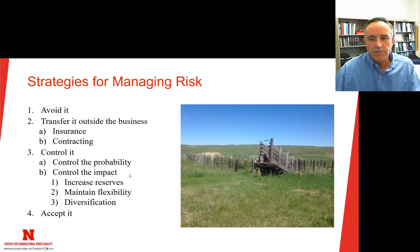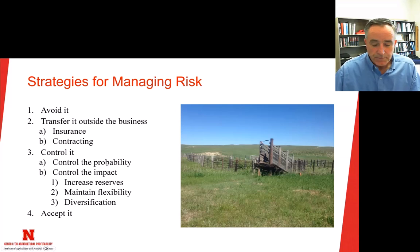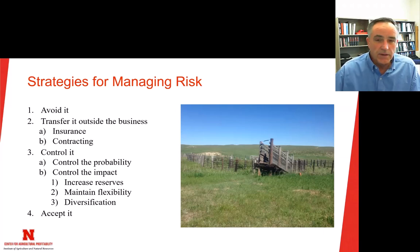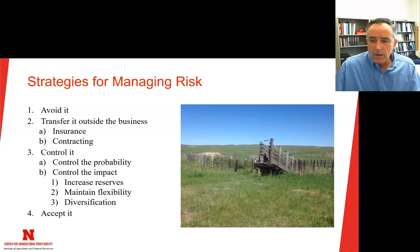On the human resource side, controlling the probability that you lose a key employee is something to take seriously. Treating them well — not just paying them well but treating them as part of the family, giving them time off on weekends — all of those control that probability. This is a good summary of things you can think about when managing risk in any agricultural operation.